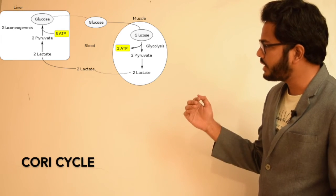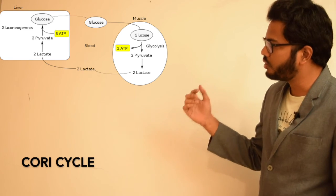This generation of glucose within the liver based on lactate produced in skeletal muscle is called the lactic acid cycle or Cori cycle. These are the important points pertaining to the lactic acid cycle.